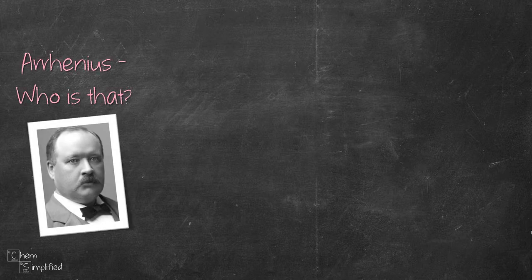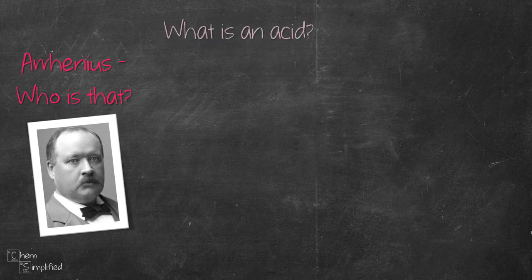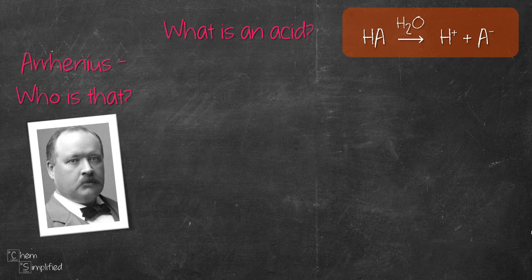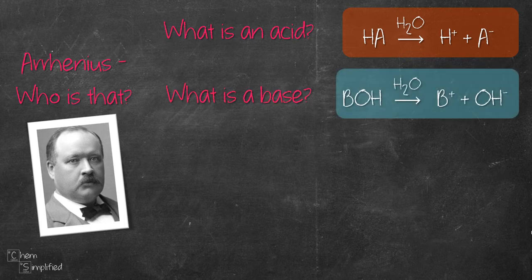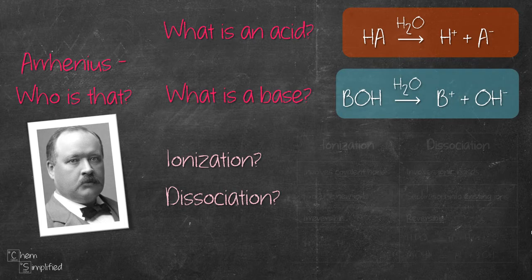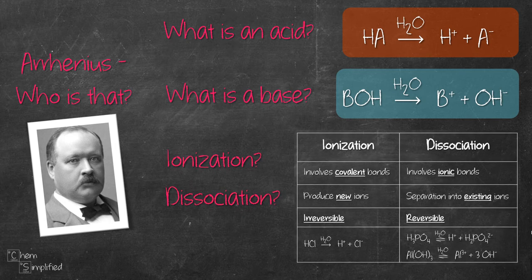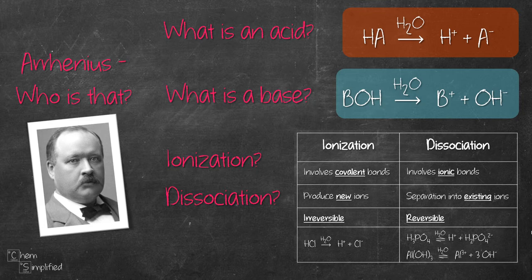To recap, Arrhenius theory was discovered by Cervantes Arrhenius in 1887. Arrhenius acid releases H plus ions in water while Arrhenius base releases OH minus ions in water. The difference between ionization and dissociation lies in the type of bonds the acid or base has. The equations for both are written in the same manner where H2O is placed above the arrow and we get H plus or OH minus ions plus the corresponding anion or cation.